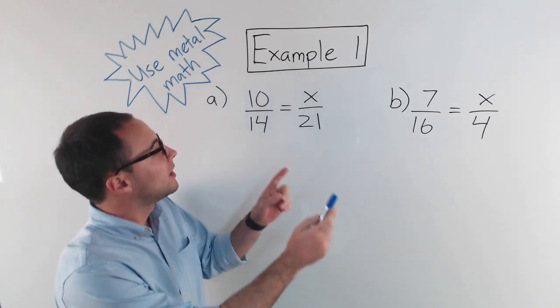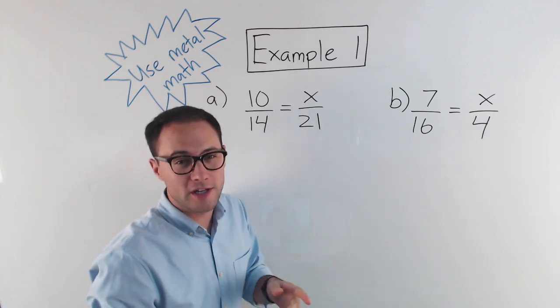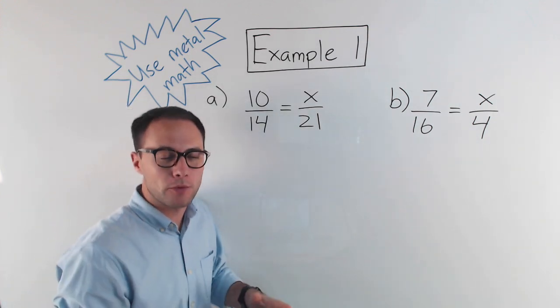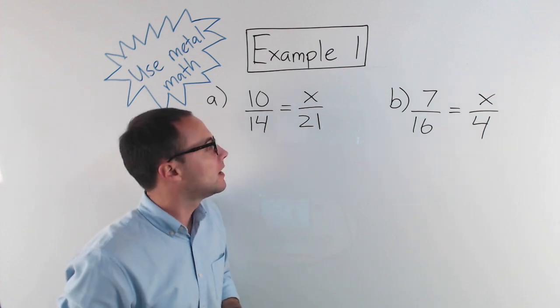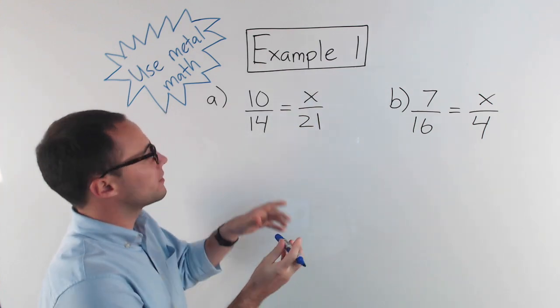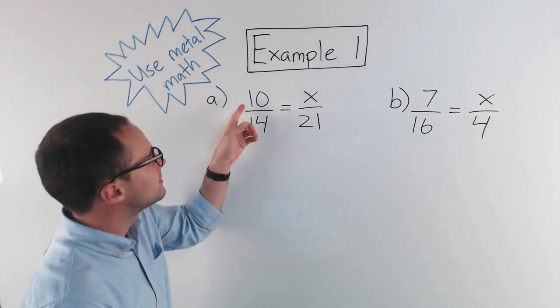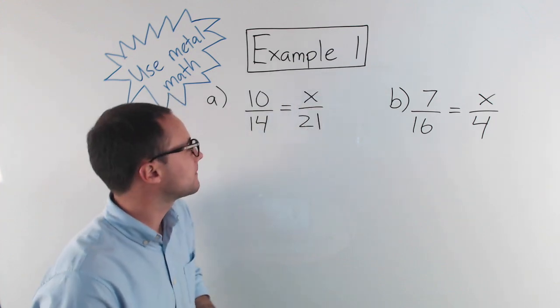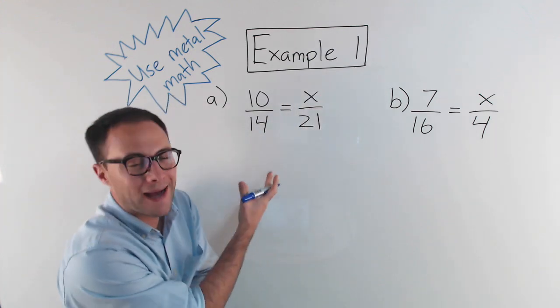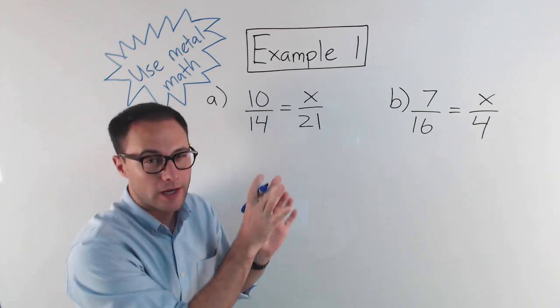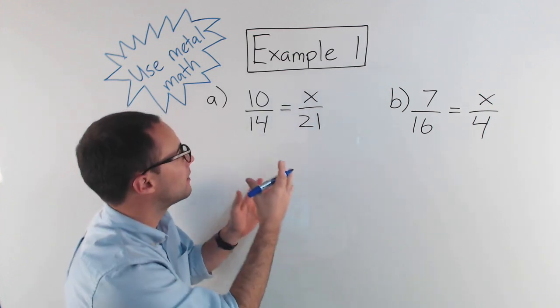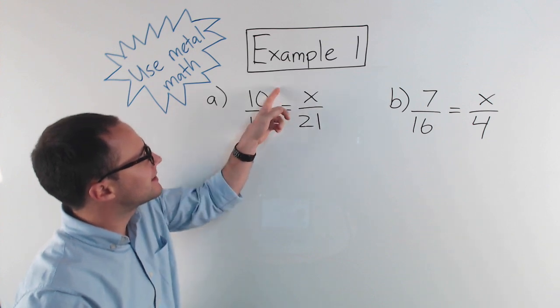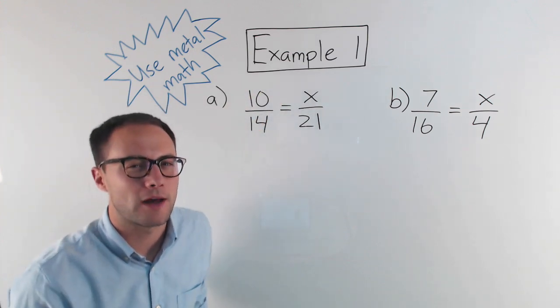All right, here's our first example. We've got two proportions we're going to solve, and the way we're going to solve it is just using mental math. We're not going to do anything real fancy. So for this first proportion, 10 over 14 is equal to x over 21. I'm solving for x. Now, I'm not going to use cross multiplication. We're not going to do that yet. That's going to be the next method. Right now, if I look at this, I notice that 10 over 14, I can simplify that.